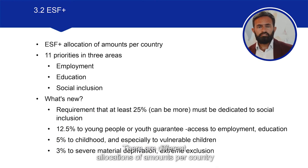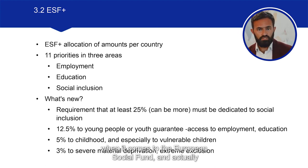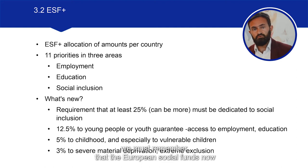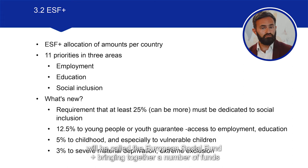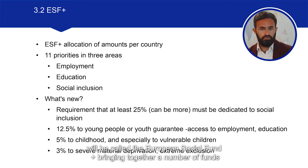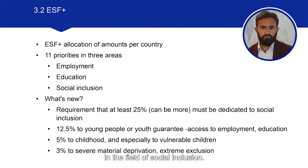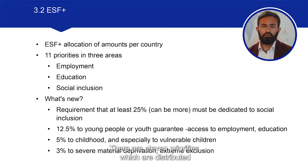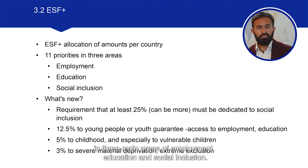There are different allocations of amounts per country when it comes to the European Social Fund. We must remember that the European Social Fund will now be called European Social Fund Plus, bringing together a number of funds in the field of social inclusion. There are 11 priorities which are distributed in three main areas: employment, education, and social inclusion.